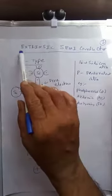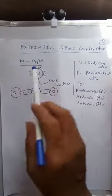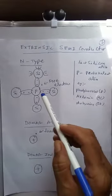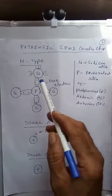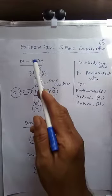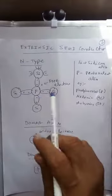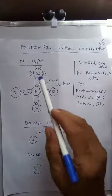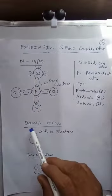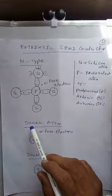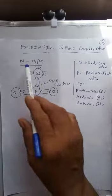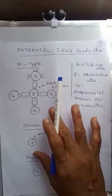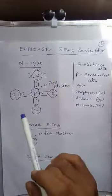This topic is extrinsic semiconductors. There are two types of extrinsic semiconductor material: one is n-type and the second one is p-type. We will discuss p-type later. Now we will discuss how the n-type is formed.